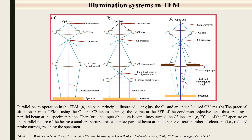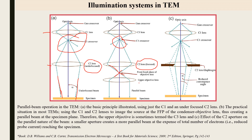Regarding the illumination system: in the first example, only C1 is used and C2 is under-focused, so there is no crossover at the correct image plane. In the second example, after C1 produces the first crossover, C2 is adjusted to get a focused beam with a second crossover at the front focal plane of the objective lens, resulting in a parallel beam toward the specimen.